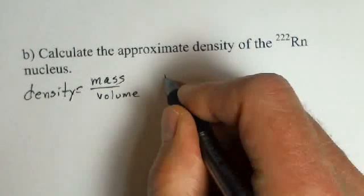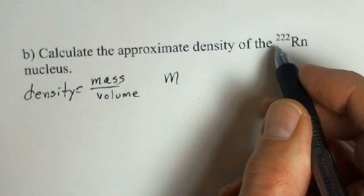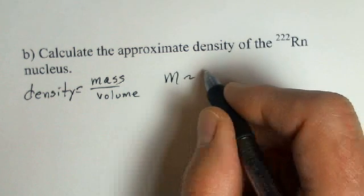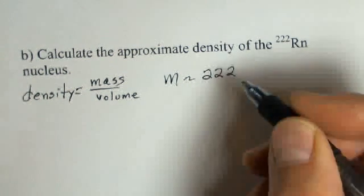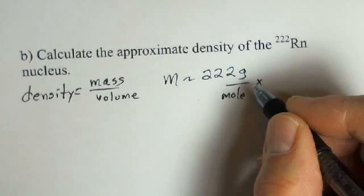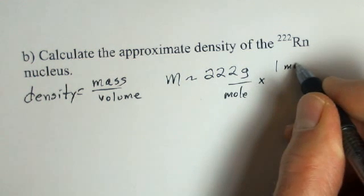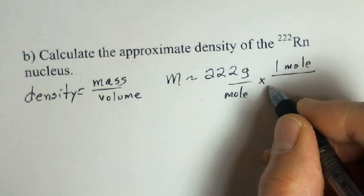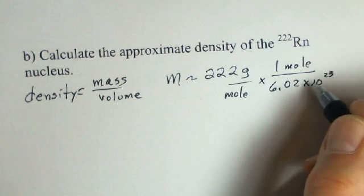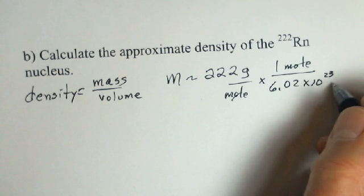The m, we need to start with our atomic mass number. This tells us approximately how many grams there are for a mole of the material. So roughly 222 grams per mole. And now we can use Avogadro's number to get down to one nucleus. That's the one mole, 6.02 times 10 to the 23rd. And the moles will cancel. We're down just to the one nucleus.